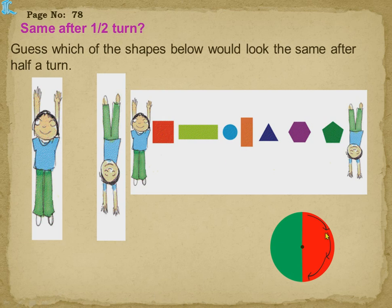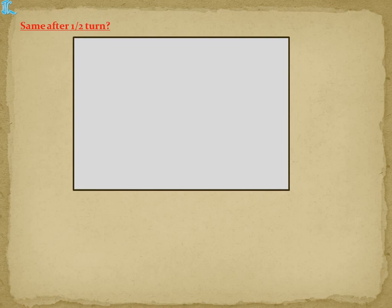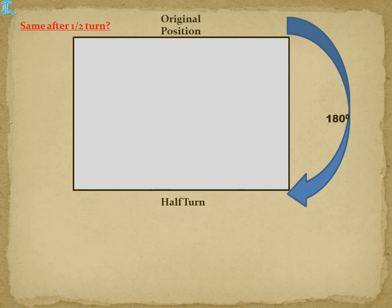Now, guess which of the shapes below would look the same after half a turn. Half a turn means: when the girl is standing this way, turning to this side is half a turn. Take a circle divided into two equal colors — green and red. Half a turn means the object moves from one side to the other, completing half a turn — that is one-half turn. Complete angle is 360 degrees, so half of that is 180 degrees; covering 180 degrees is also called a half turn.